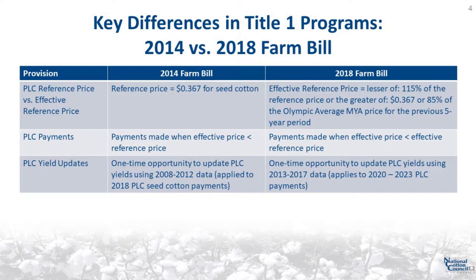For seed cotton, the effective reference price is expected to be 36.7 cents. The 2018 Farm Bill provisions allow owners and operators to update PLC payment yields starting with the 2020-21 crop year. The yield update is based on 2013 to 2017 data.